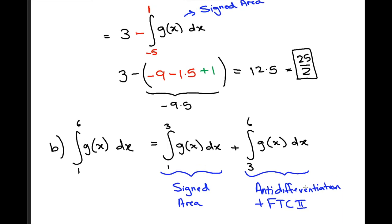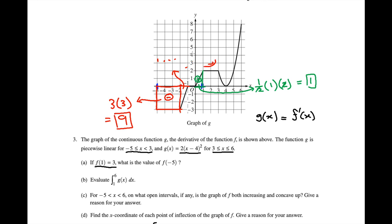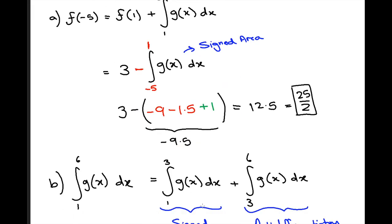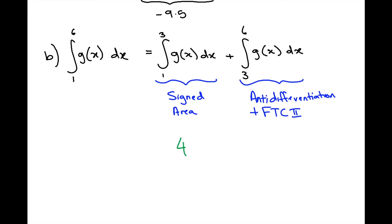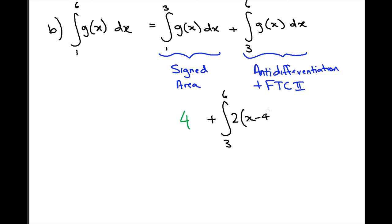So let's do the first piece. The area from 1 to 3 is just a 2 by 2 square, so the area is 2 times 2, which is 4. Then for the second piece, we're going to evaluate the integral from 3 to 6 of 2(x − 4)² dx, which will require a little bit more work.